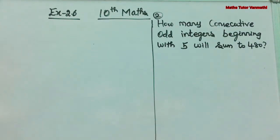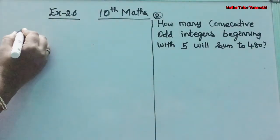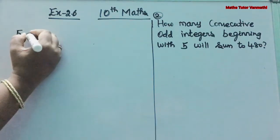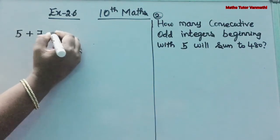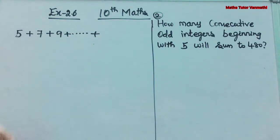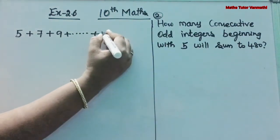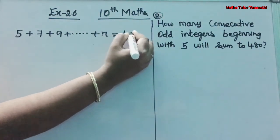The problem is: how many consecutive odd integers beginning with 5 will sum to 480? They are asking how many consecutive odd integers there are, beginning with 5 — that is 5 + 7 + 9 + etc. They didn't give the last value; they just said the sum is equal to 480.